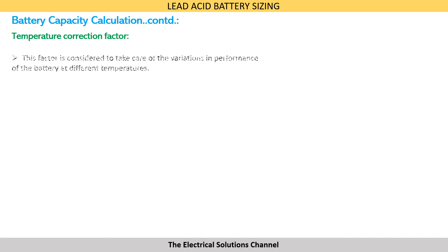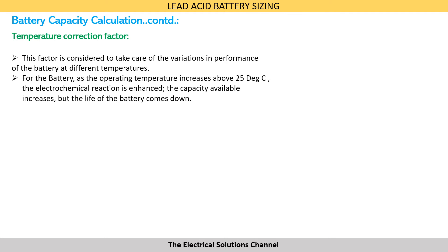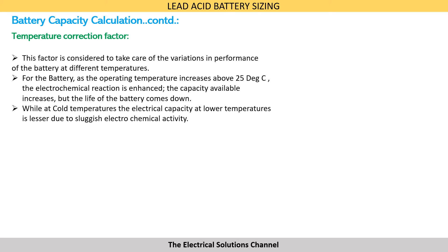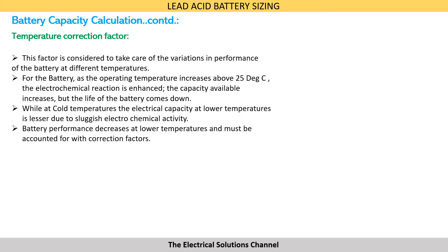Temperature correction factor: this factor is considered to take care of variations in performance of the battery at different temperatures. As the operating temperature increases above 25 degrees centigrade, the electrochemical reactions in the battery are enhanced and the capacity available increases, but the life of the battery comes down. At cold temperatures, the electrical capacity is lesser due to sluggish electrochemical activity, so battery performance decreases and this must be accounted for with correction factors.